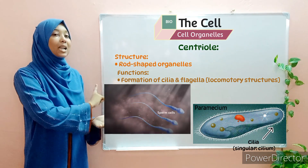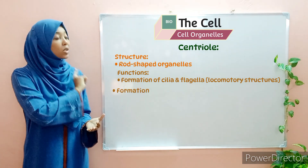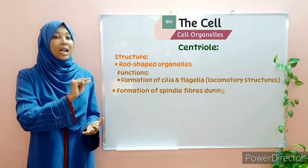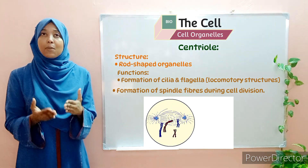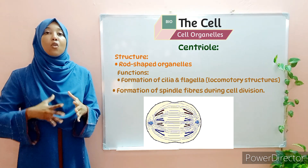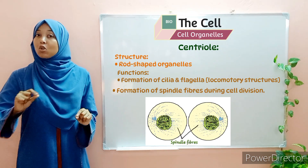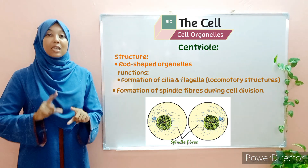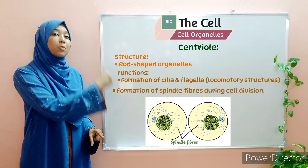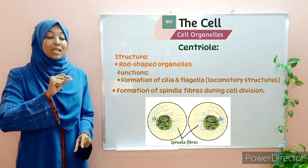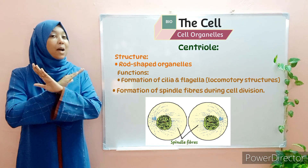The first function of centrioles is that they form cilia and flagella. Another function of centrioles is that they are responsible for the formation of spindle fibers during cell division in animal cells. Cell division is a process whereby a cell divides in order to form new cells — a concept discussed in detail in Form 3 biology under the topic of reproduction. During cell division, certain fibers called spindle fibers are produced, and centrioles form these spindle fibers. Notably, centrioles are absent in plant cells.